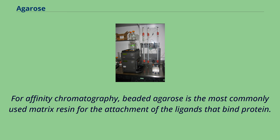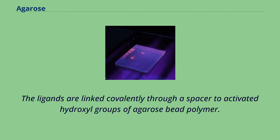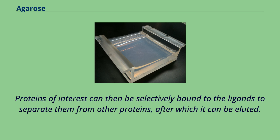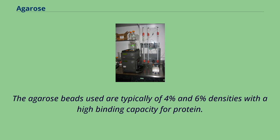For affinity chromatography, beaded agarose is the most commonly used matrix resin for the attachment of ligands that bind protein. The ligands are linked covalently through a spacer to activated hydroxyl groups of the agarose bead polymer. Proteins of interest can then be selectively bound to the ligands to separate them from other proteins, after which they can be eluted. The agarose beads used are typically of 4% and 6% densities with a high binding capacity for protein.